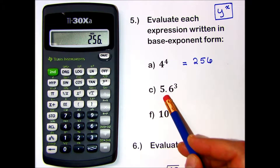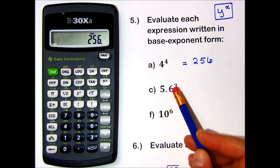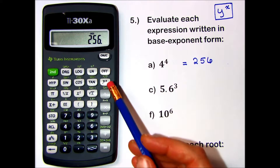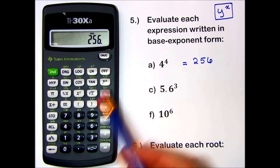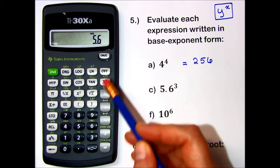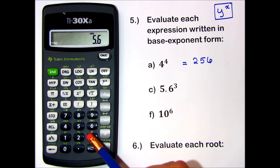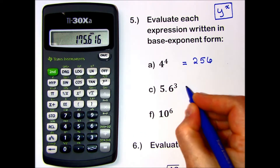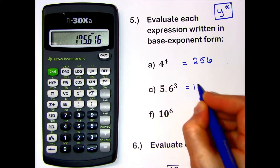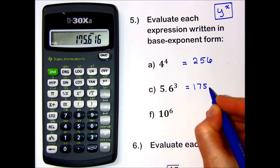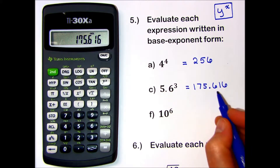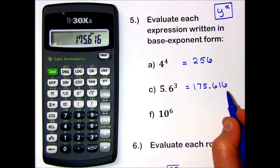Let's try a decimal: 5.6 cubed. I do not have a cube button on this calculator, so I will use my exponent key — 5.6 to the power of 3. Press equals, and I have 175.616. The directions say to round to 3 decimal places, so I will keep these digits.